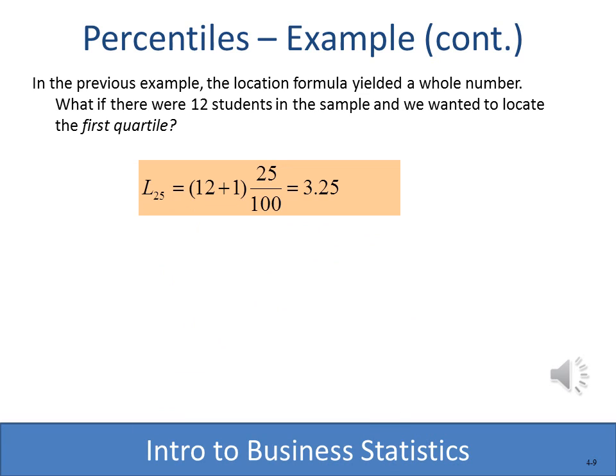As we saw when computing the median, an odd number of values makes finding the midpoint easy, but with an even number we average two values. The same applies to percentiles. If instead of 11 students we had 12, the formula for the first quartile gives (12 + 1) × 25 / 100 = 3.25 — and there is no exact position 3.25, just as we handled it for the median.